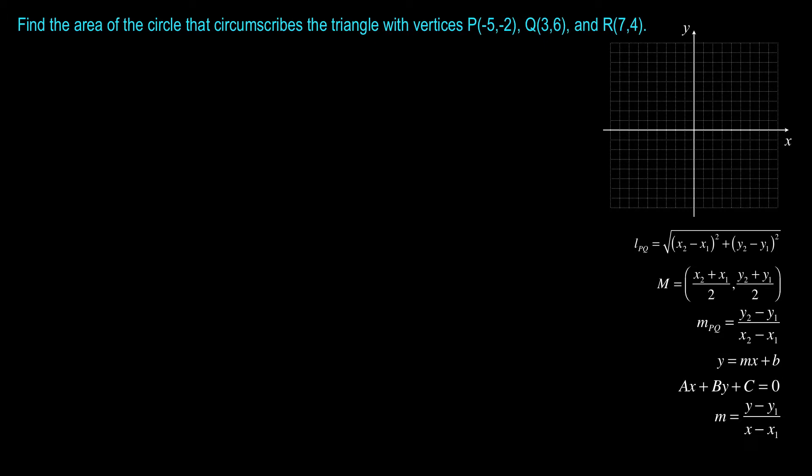Find the area of the circle that circumscribes the triangle with vertices P(-5, -2), Q(3, 6), and R(7, 4).